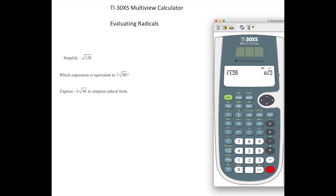Let's try again. Let's look at number 2. Which expression is equivalent to 7 square root 90? Now this example is a little bit different than the first one. Notice we have a 7 first. And always remember enter as you see it, or enter as is.